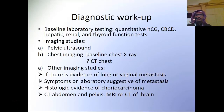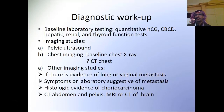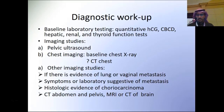Other imaging studies like CT scan of the abdomen and pelvis, MRI, or CT scan of the brain should be considered in selected patients — such as those with evidence of lung or vaginal metastasis, neurological symptoms, elevated liver function tests suggesting metastasis, or histological evidence of choriocarcinoma, since choriocarcinoma is highly metastatic.